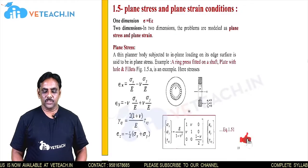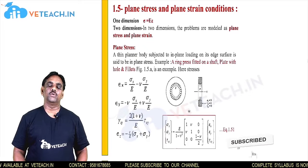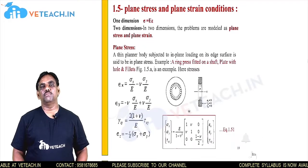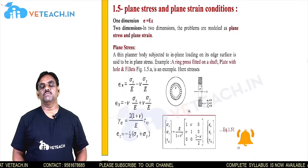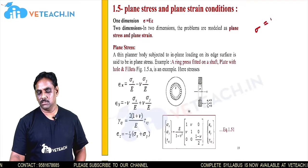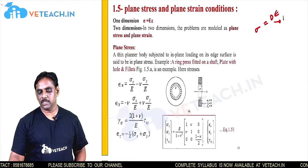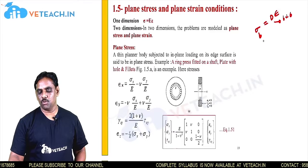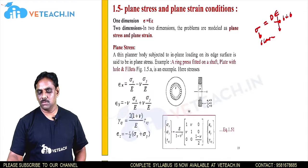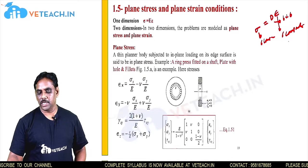Welcome to Vteach. In the previous session we discussed how to express the 6 components of the stresses and the 6 components of the strains, like sigma is equal to B into epsilon, where B is a 6 by 6 matrix. These are the 6 components of the stresses and these are the 6 components of the strains.